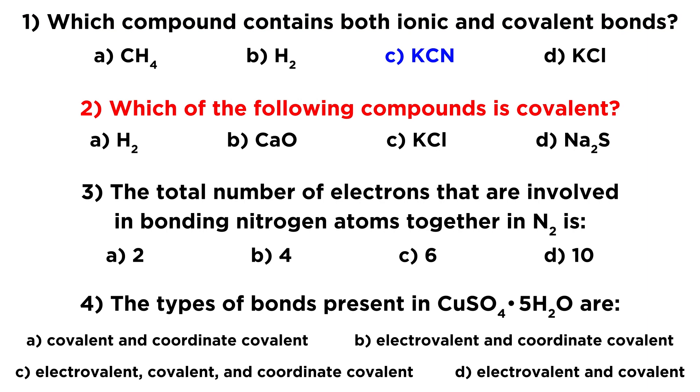For number two, which of the following compounds is covalent? And so just looking at these here, we can see a lot of options that are between a metal and a nonmetal. And we know that metals and nonmetals will tend to make ionic compounds with each other. So the only one that doesn't fall into that category is A, hydrogen, H2. We know that two hydrogen atoms will form a single covalent bond between one another to form a molecule of hydrogen. That is a diatomic molecule, and that is a covalent bond. So calcium oxide and potassium chloride and sodium sulfide, those are all ionic compounds. So A will be our answer.